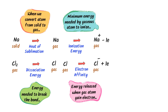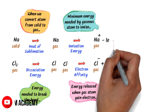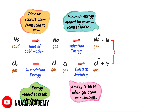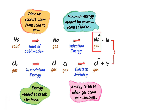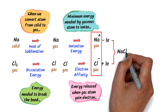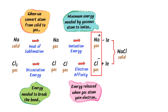Now every ingredient is ready — let's mix them all. So this positive ion of sodium and this negative ion of chlorine will combine together to form one mole of sodium chloride. We have successfully prepared one mole of sodium chloride.